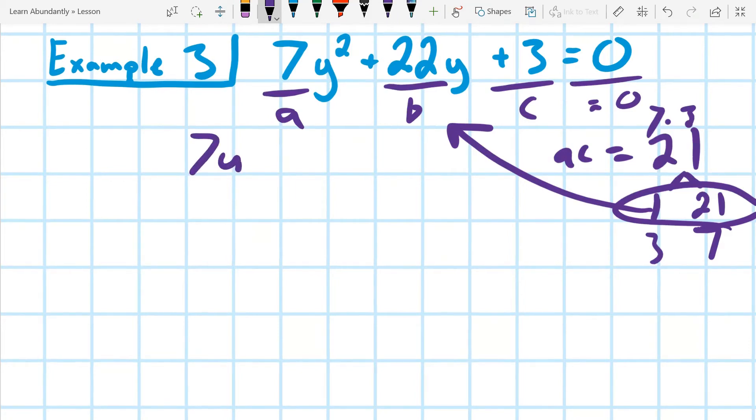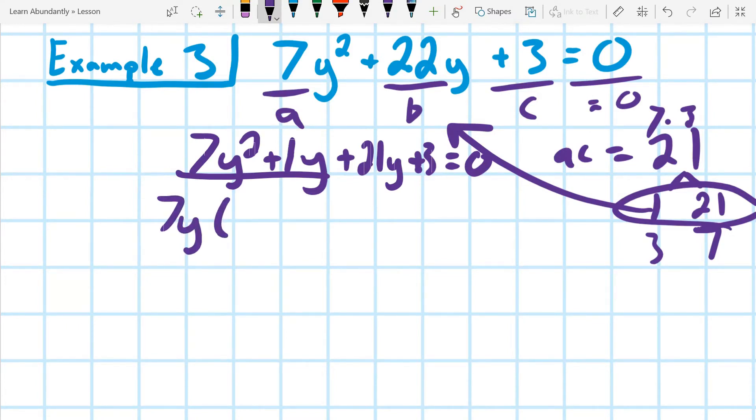I'm going to go ahead and split that up as 7y squared plus 1y plus 21y plus three equals zero. Remember, it's still going to be equal to zero. Factor by grouping means I'm going to take out a 7y. That leaves me with, well, I can't take a 7 out because I'd have to take a 7 out of both of them. It looks like I can just take out a y, and that would leave me with 7y plus 1.